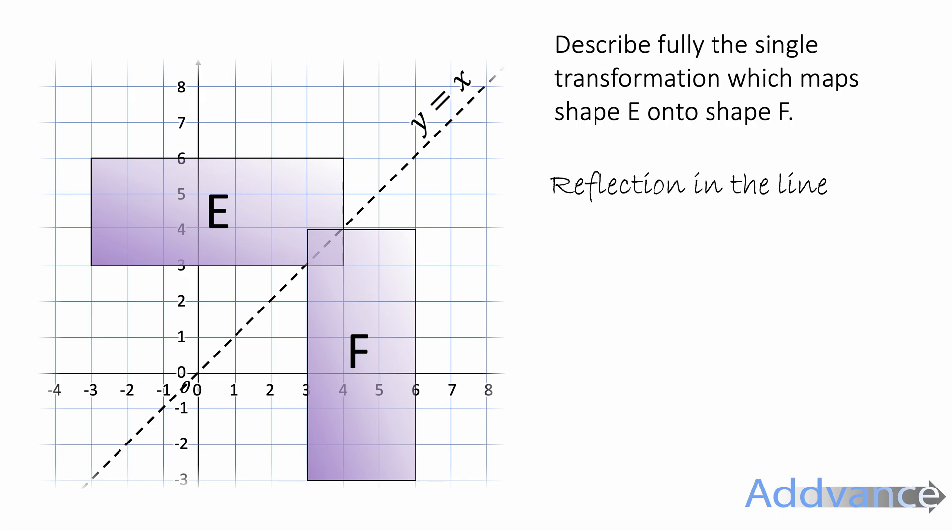If it's reflecting diagonally, quite often it is just the line Y equals X. So if you're in doubt in the exam, just assume it's Y equals X. Although it could be another diagonal line.